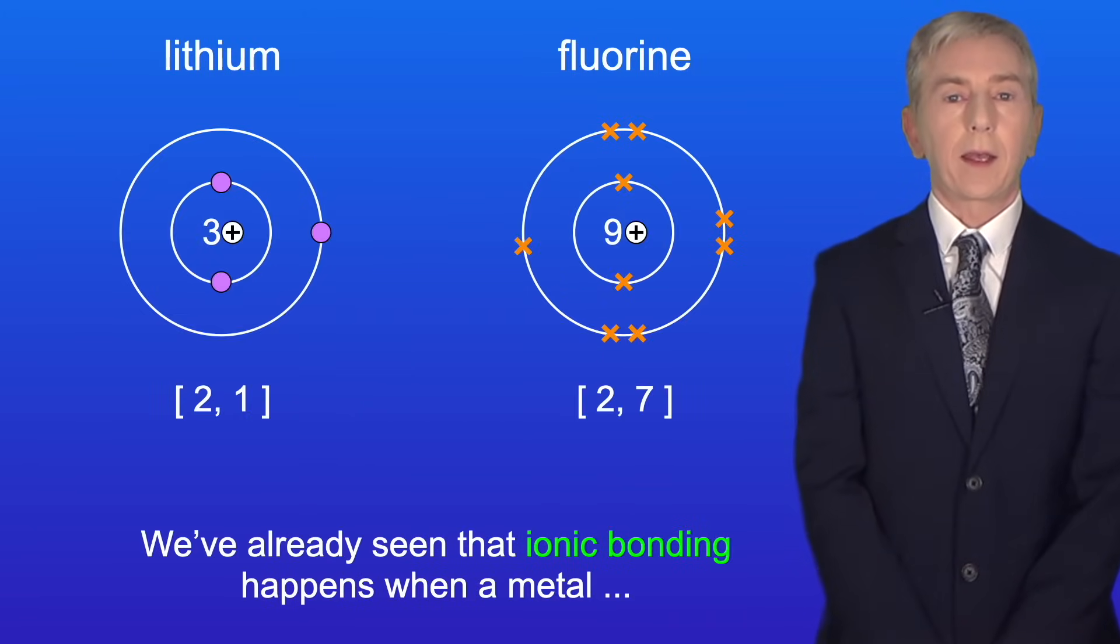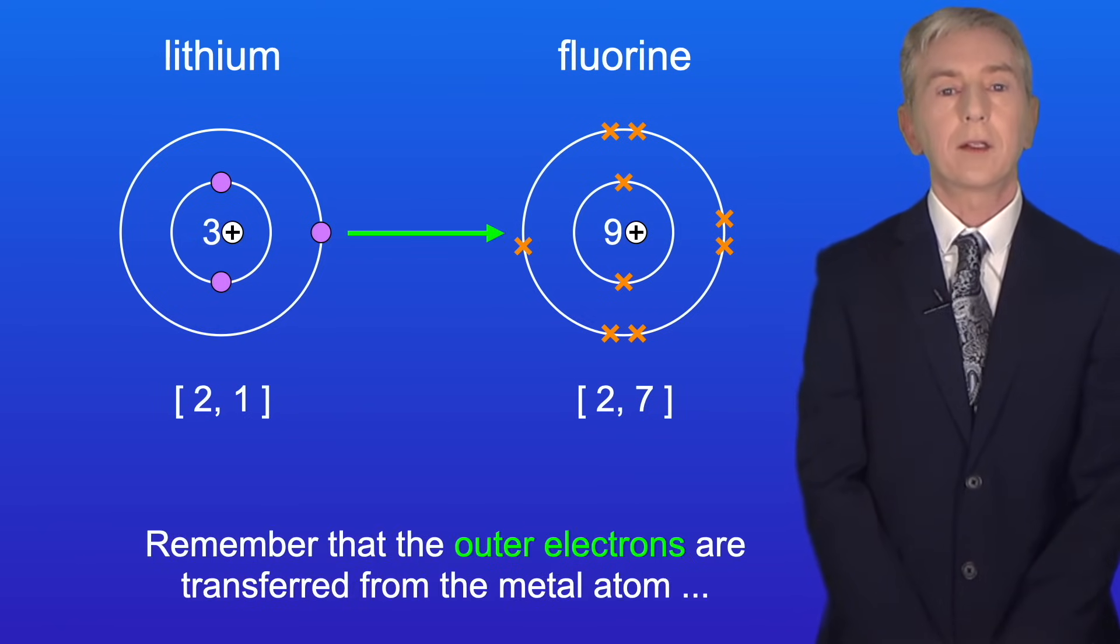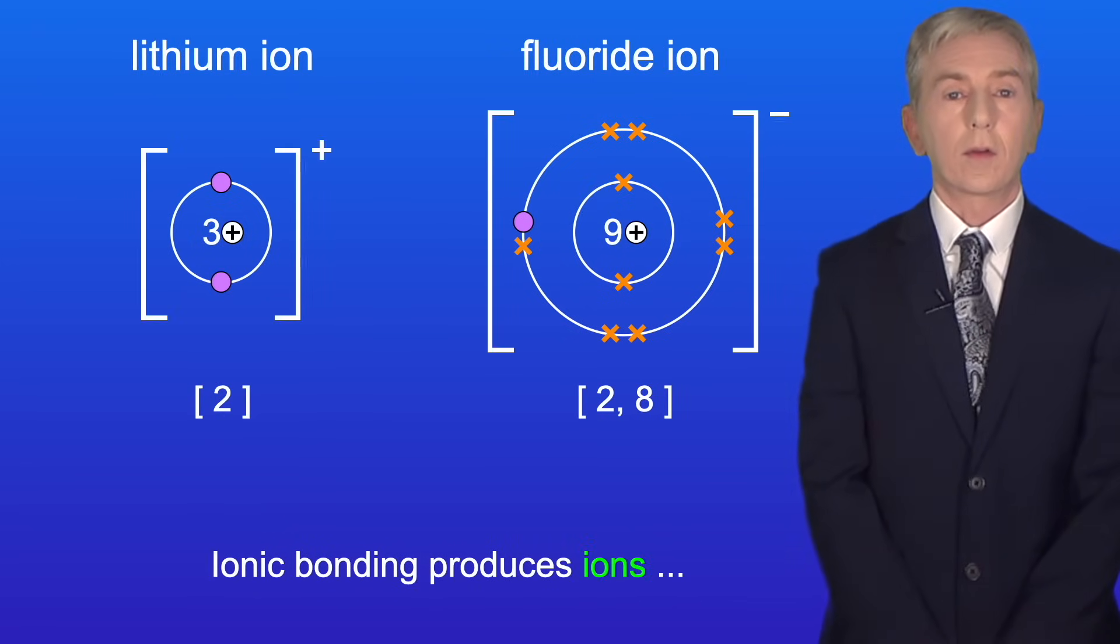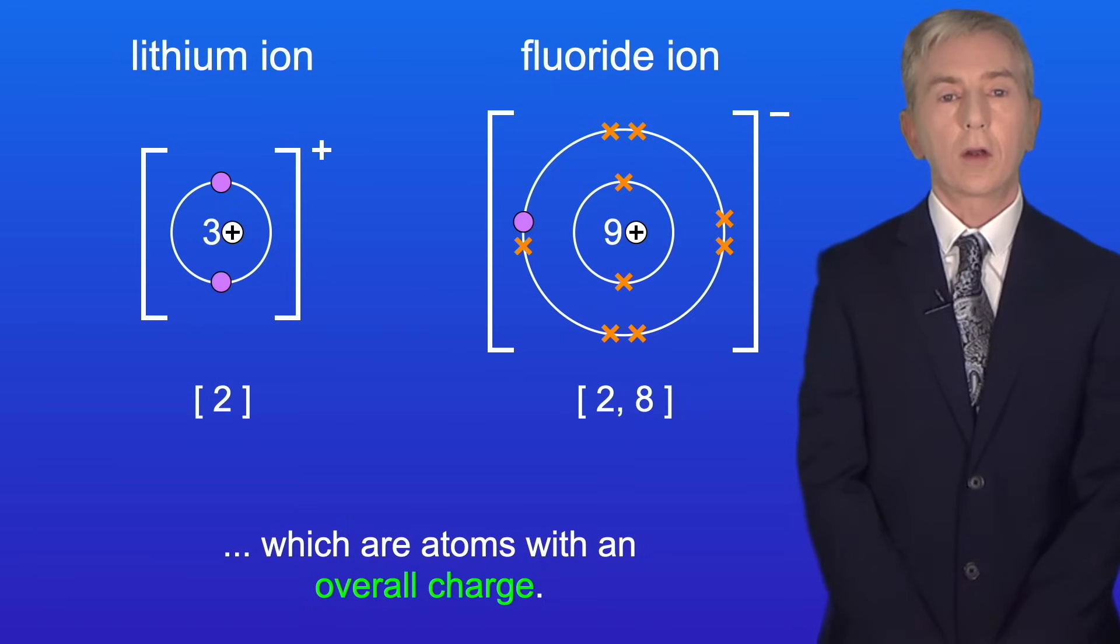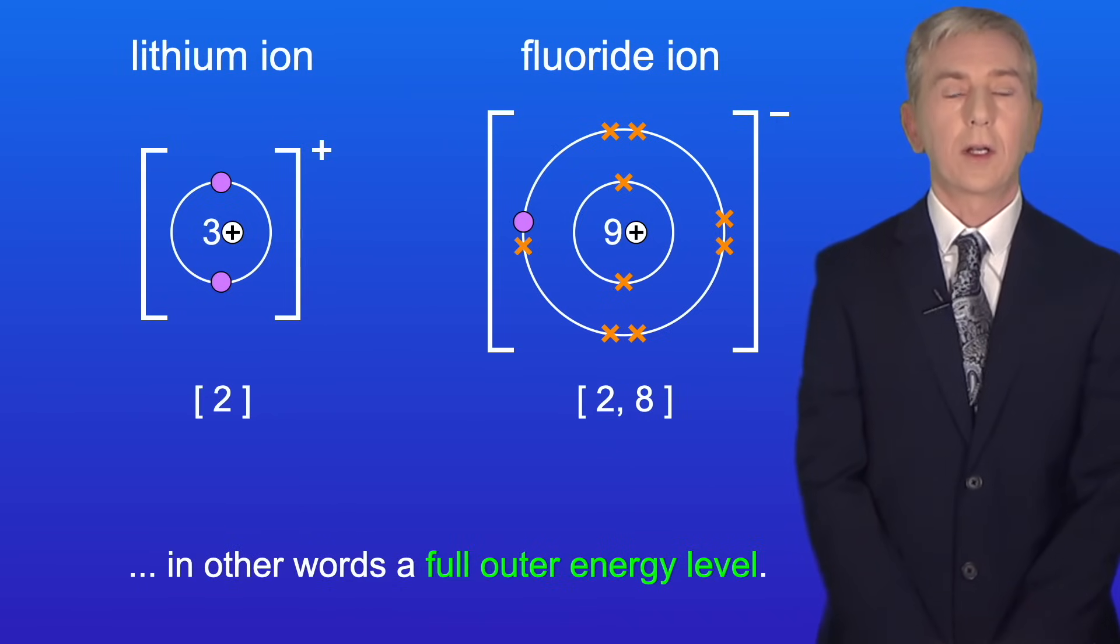We've already seen that ionic bonding happens when a metal reacts with a nonmetal. Remember that the outer electrons are transferred from the metal atom to the nonmetal atom. Ionic bonding produces ions, which are atoms with an overall charge. And ions have the stable electronic structure of a noble gas, in other words a full outer energy level.